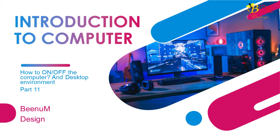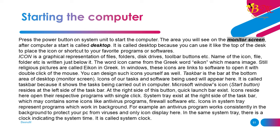Part 11: Starting the computer. Press the power button on the system unit to start the computer. The area you will see on the monitor screen after the computer starts is called the desktop. It is called a desktop because you can use it like the top of a desk to place icons or shortcuts to your favorite programs or software. An icon is a graphical representation of files, folders, disk drives, toolbar buttons, etc. The name of the icon, file, or folder is written just below it. In Windows, these icons are links to software, opened with a double-click of the mouse. The taskbar is the bar at the bottom area of the desktop — icons of tasks and software being used appear here.